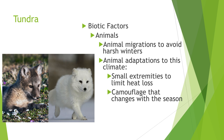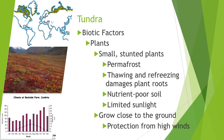Next is tundra. Biotic factors of animals include migration, small extremities to reduce heat loss, and camouflage that changes with the seasons. The arctic fox has brown fur in summer for camouflage, and its fur changes to white when snow falls. Plants in the tundra are usually small and stunted because of a layer of frozen subsoil called permafrost. As the permafrost freezes and thaws it damages plant roots. Plants don't grow large because the soil lacks nutrients, there is very limited sunlight, and high winds cause them to grow low to the ground.